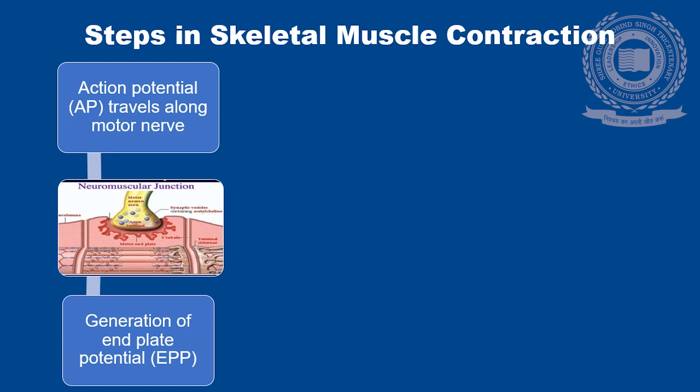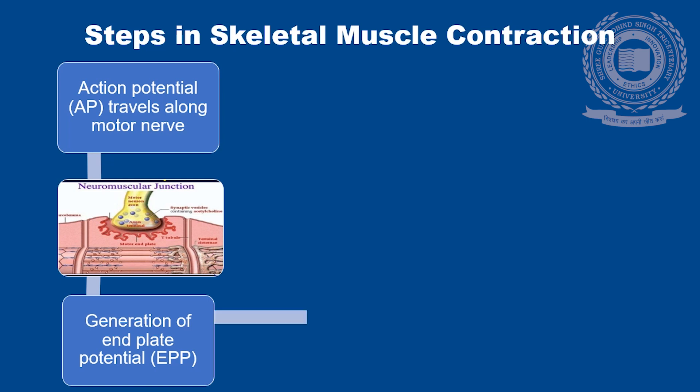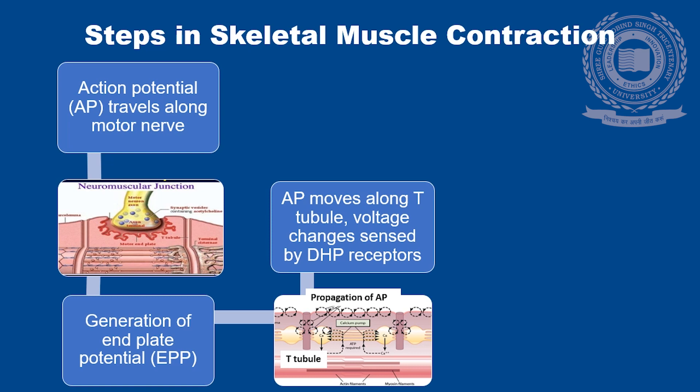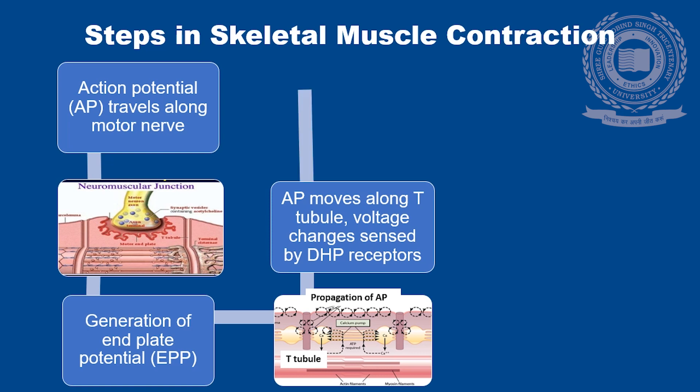This initiates an action potential and there is propagation of action potential on the sarcolemma. The action potential moves along the T-tubule and voltage changes are sensed by DHP or dihydropyridine receptors, which causes opening up of calcium release channels present on the terminal system, leading to increase in calcium release in the sarcoplasm.